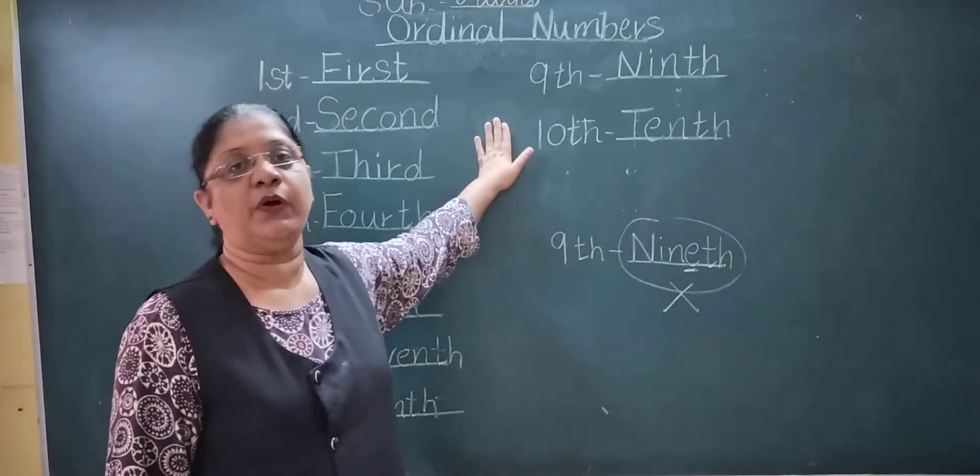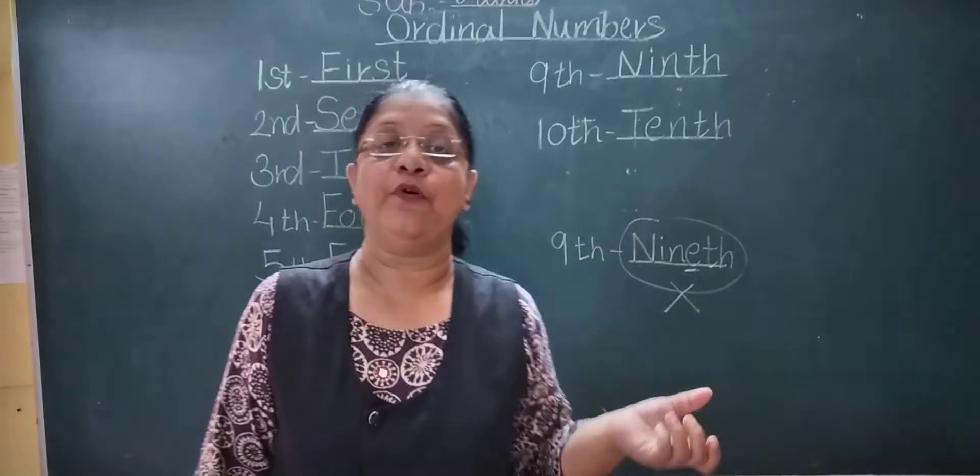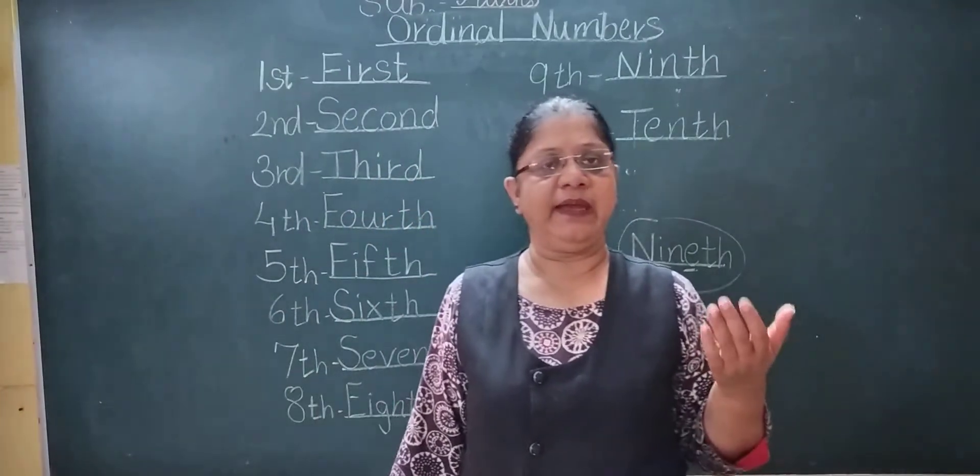And cardinal numbers means what? One, two, three, four, five, six, seven, eight, nine, ten.